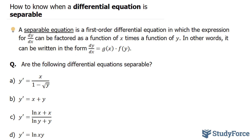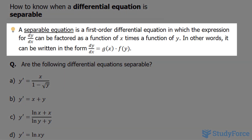In this lesson, we'll discuss how you can tell when a differential equation is separable. A separable equation is a first-order differential equation in which the expression for dy over dx can be factored as a function of x times a function of y. In other words, it can be written in the form dy over dx is equal to g of x times f of y.